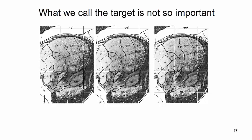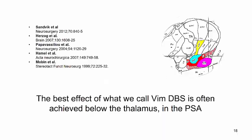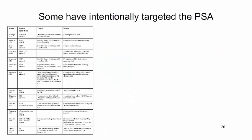DBS was first used in the VIM and later in the STN and GPI, while the PSA was more or less forgotten. However, the target name is not so important — the same name is not the same as the same target. It has been demonstrated in several studies that the best effect of what we call VIM DBS is often, or even most often, achieved below the thalamus in the PSA. Simply by introducing the electrode a few millimeters deeper, one will often achieve a good position within the PSA. We are now seeing a renaissance for the calozona inserta, considering how many groups have started to use this target.